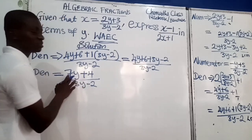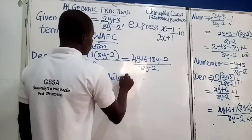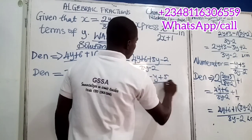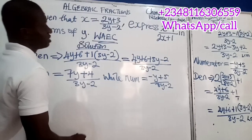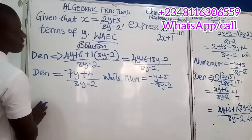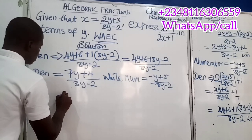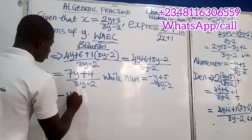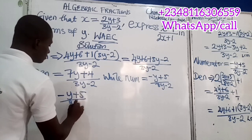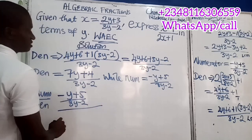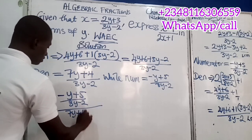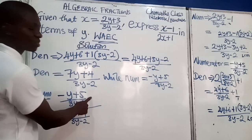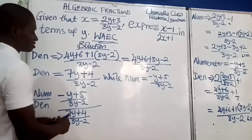So our numerator is minus y plus 5 over 3y minus 2, and our denominator is 7y plus 4 over 3y minus 2. We are now going to express the numerator divided by the denominator. This means we have minus y plus 5 over 3y minus 2, divided by 7y plus 4 over 3y minus 2.